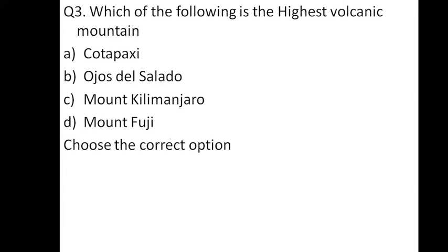Which of the following is the highest volcanic mountain? Options: Cotopaxi, Ojos del Salado, Mount Kilimanjaro, and Mount Fuji. The correct option is B, Ojos del Salado. This is in South America. Cotopaxi is also in South America. Mount Kilimanjaro is in the African continent and Mount Fuji is in Japan.